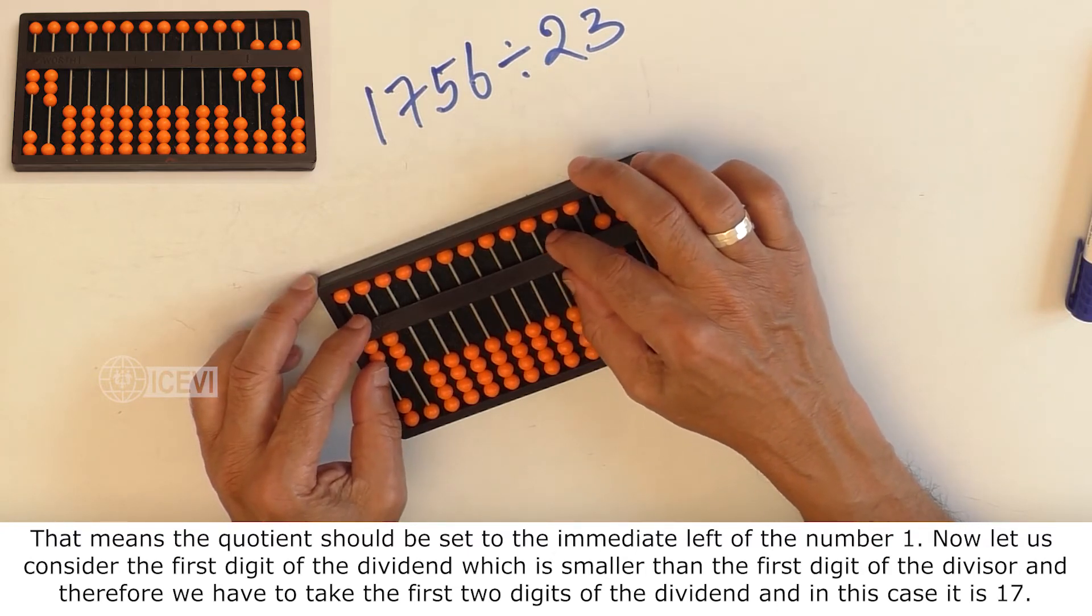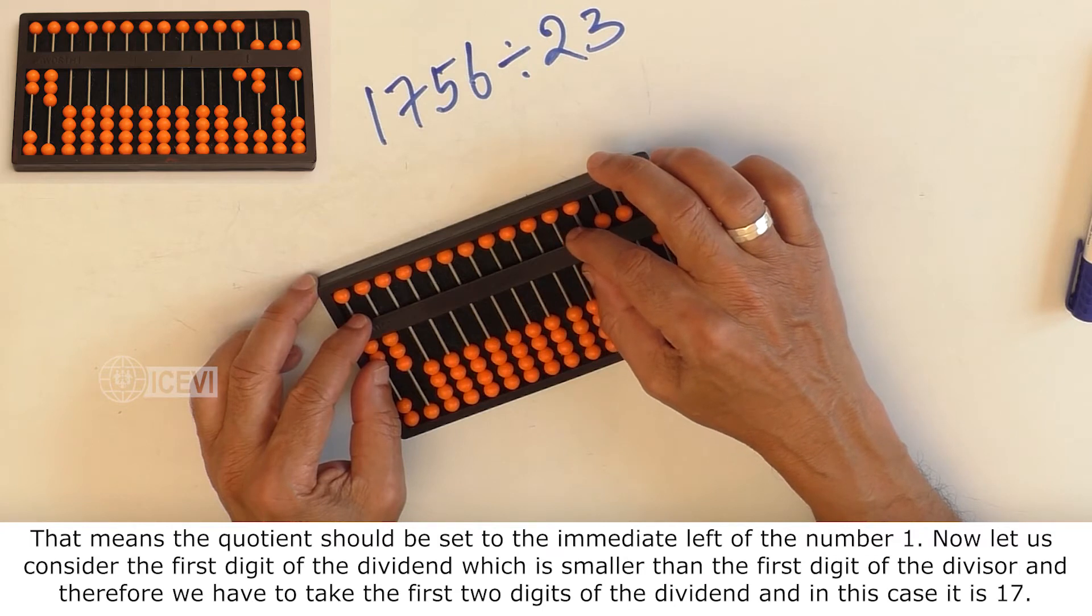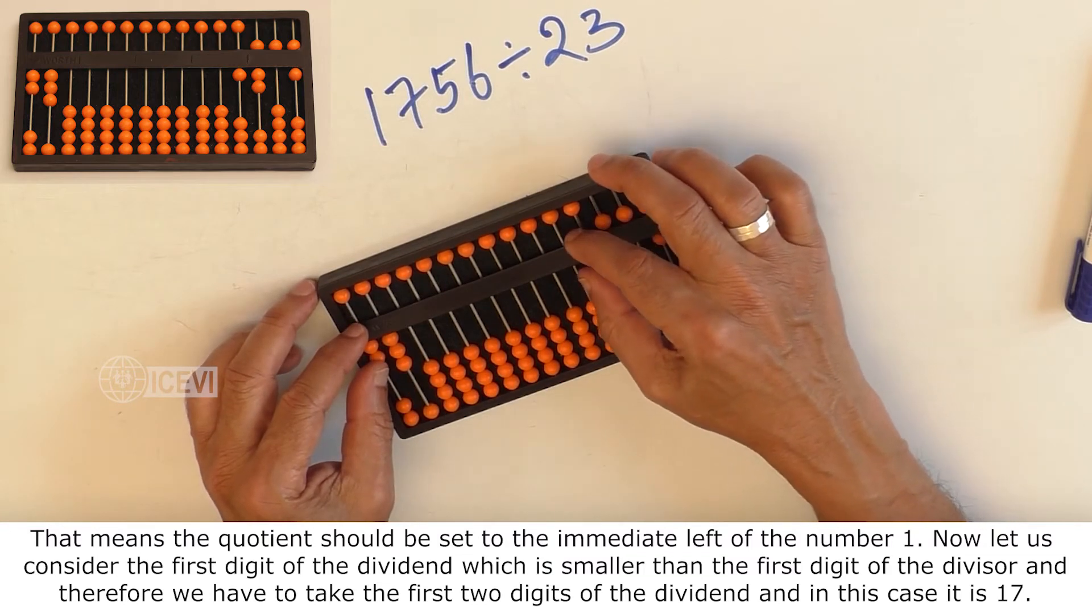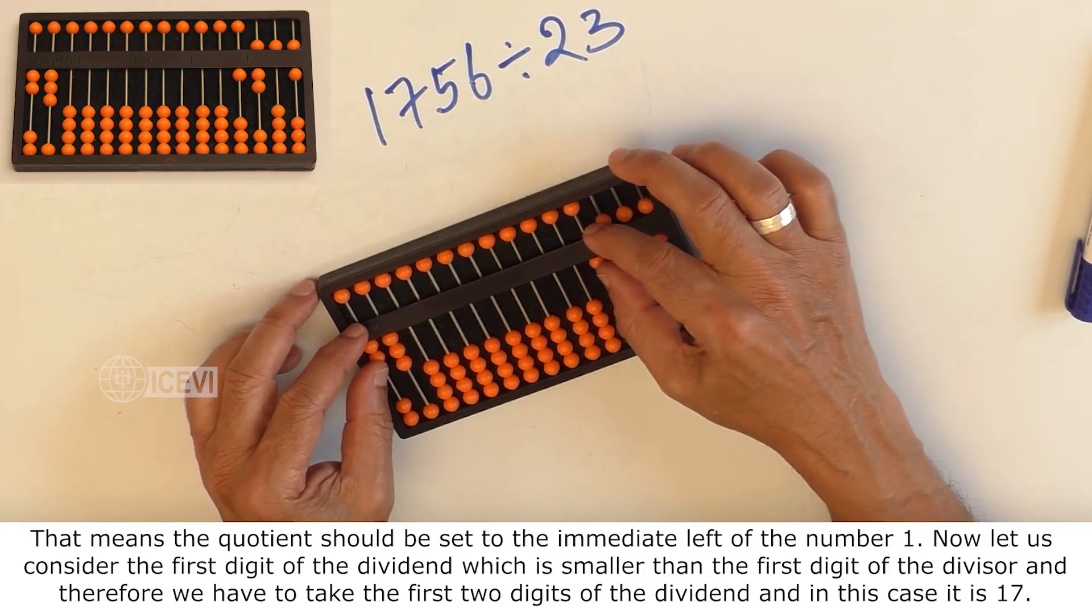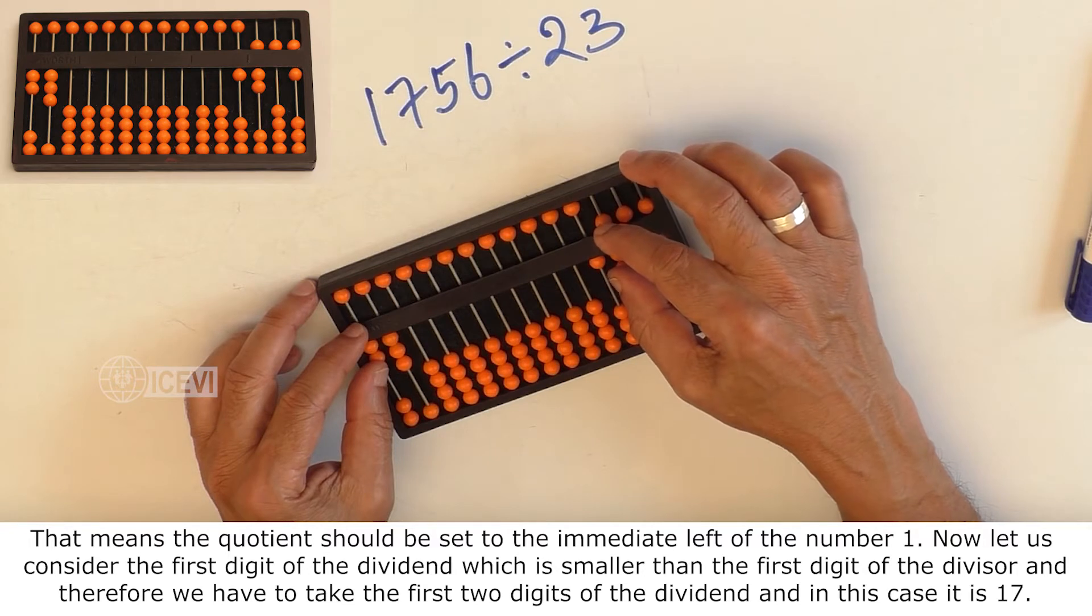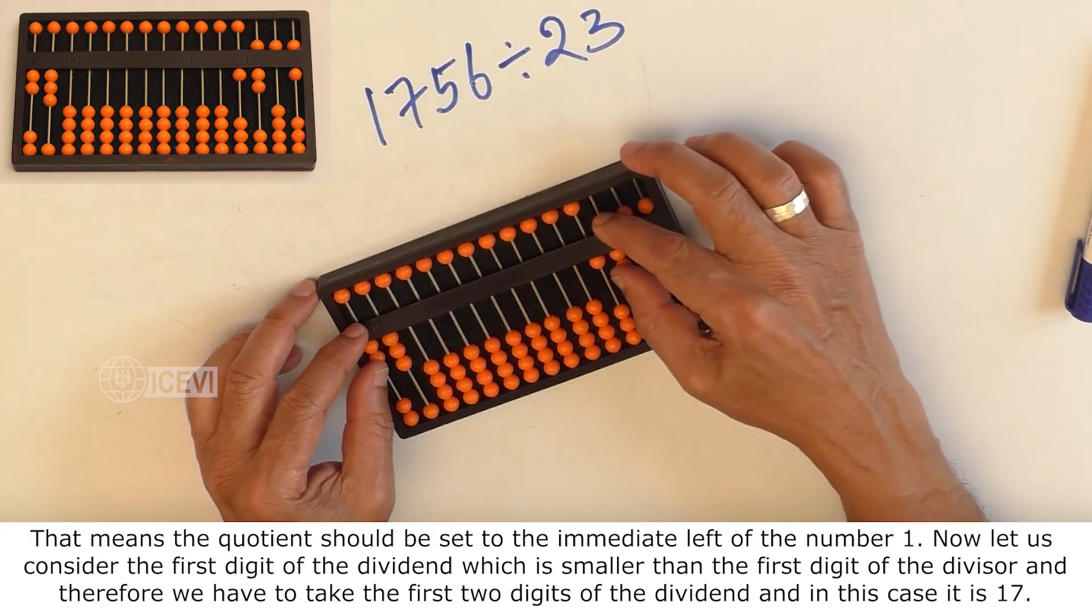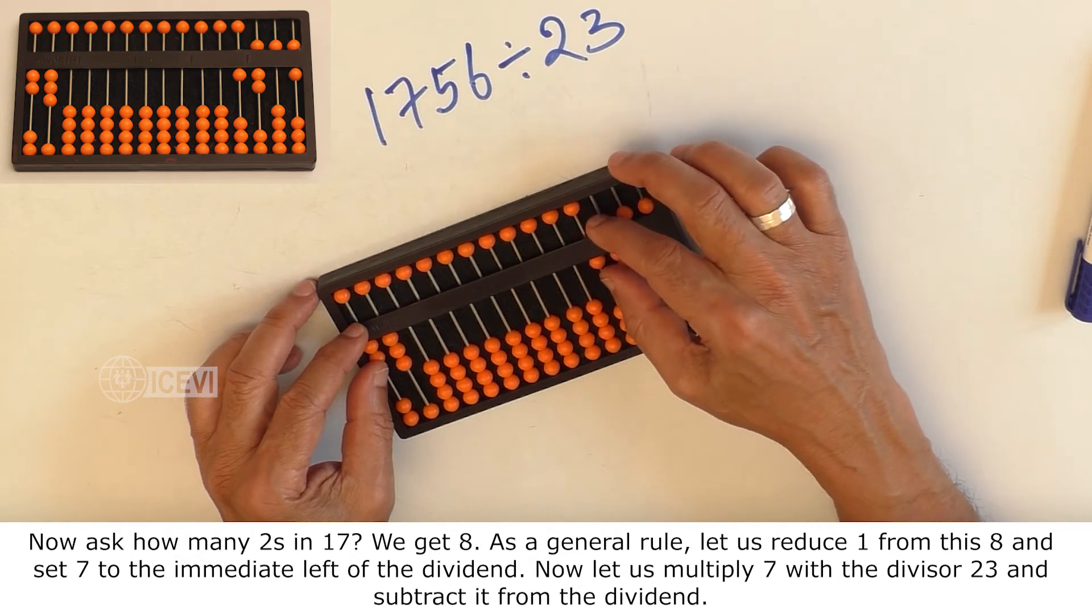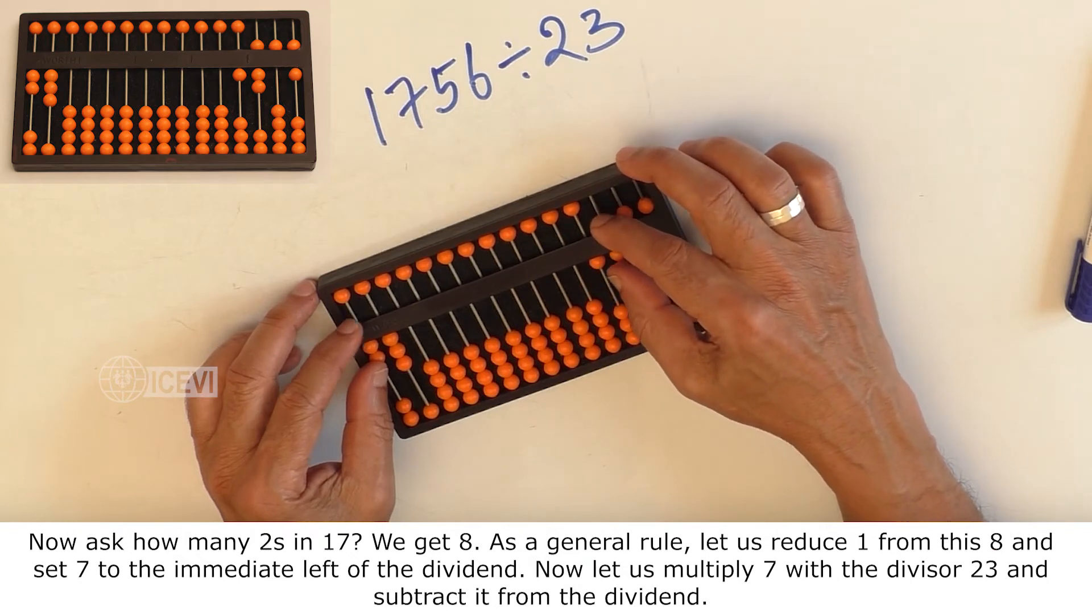Now let us consider the first digit of the dividend, which is smaller than the first digit of the divisor. And therefore, we have to take the first 2 digits of the dividend, and in this case it is 17. Now ask how many 2's in 17? We get 8.